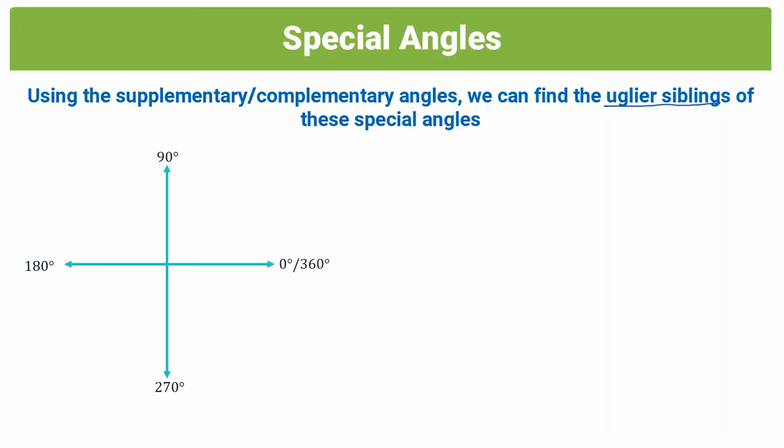And remember, in an earlier video, I mentioned that any angle greater than 90 degrees was an ugly angle. So each of the angles, 30, 45, and 60, have uglier siblings in each of the quadrants, 2, 3, and 4, where they're greater than 90 degrees, and they have siblings in these quadrants.